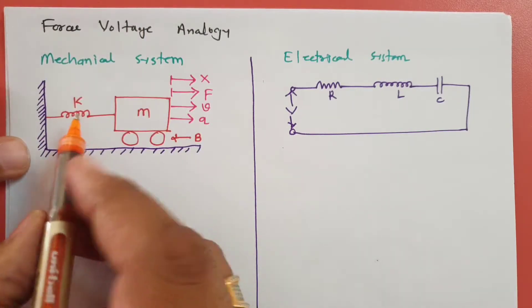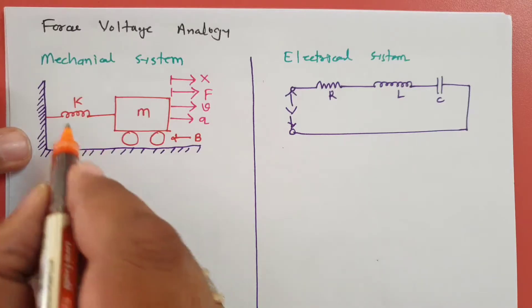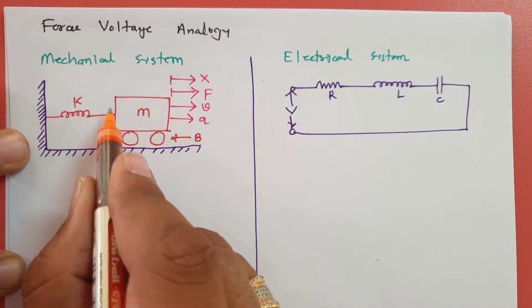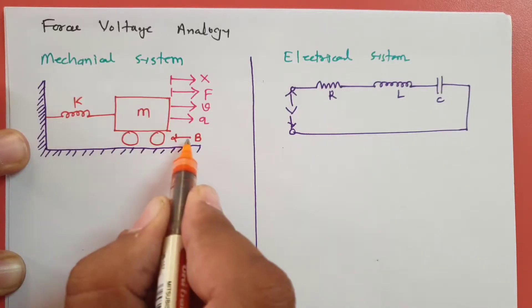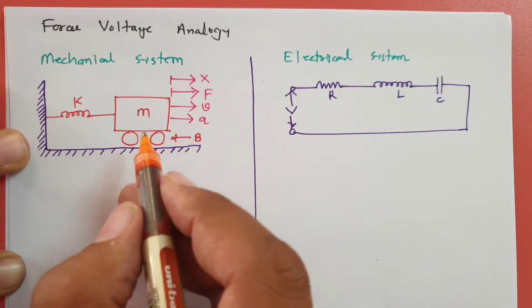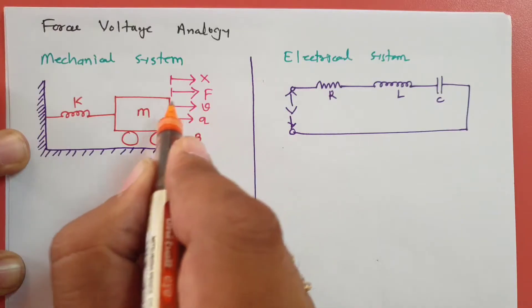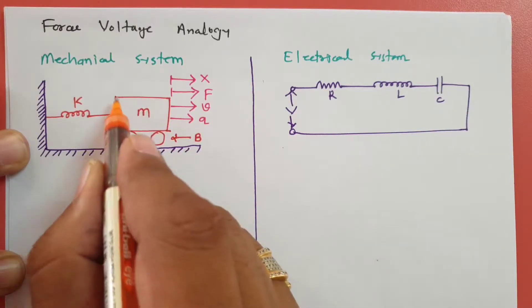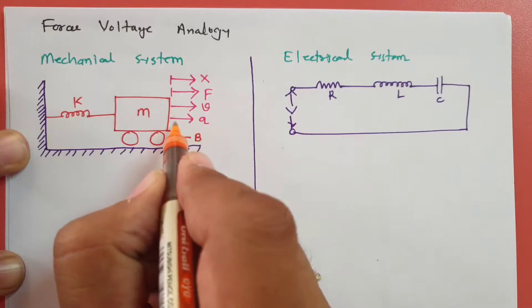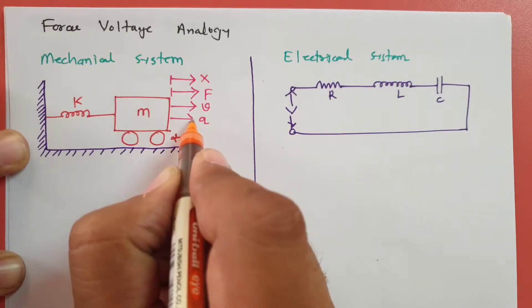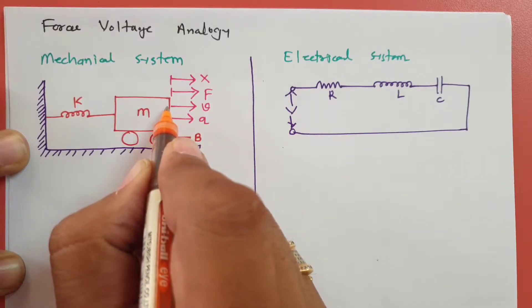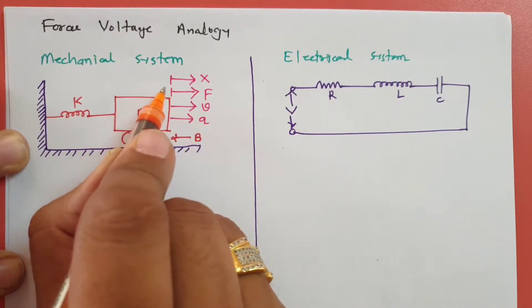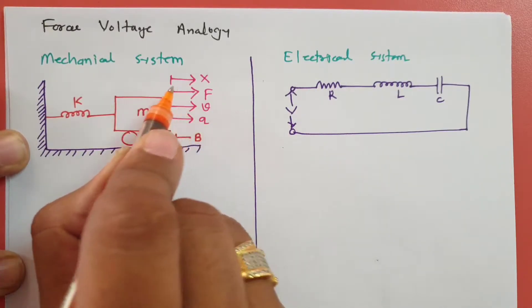In this mechanical system, we have a spring with spring constant K, we have mass M, and we have a damper with damping constant B. When we apply force F to this mechanical system, this mass will get accelerated by acceleration A, it will be having velocity V, and it will be having displacement X in this direction.